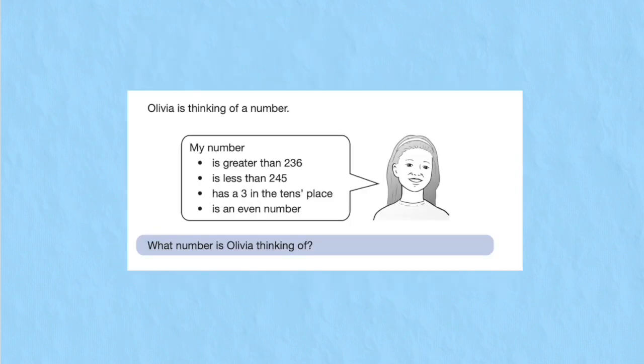Question five. Now this is a thinker. Olivia is thinking of a number. My number, and then she's given us some points, is greater than 236, is less than 245, has a three in the tens place, and is an even number. What number is Olivia thinking? Well, let's go through the options then.